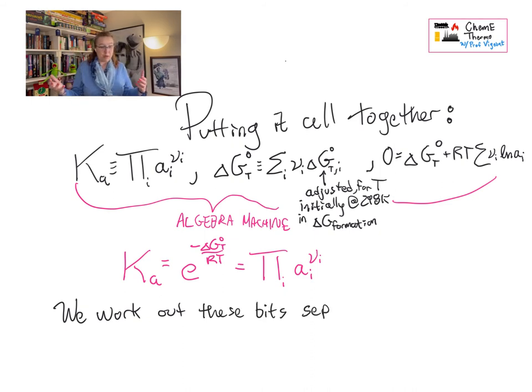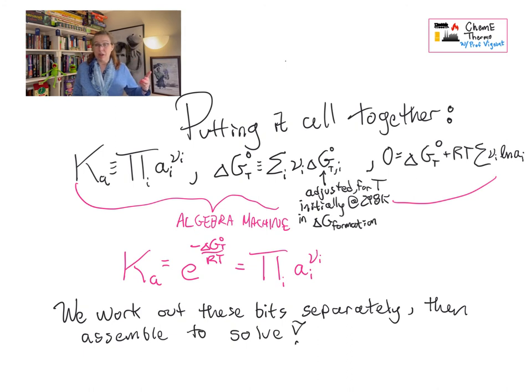Reaction equilibrium, we work out, as I say in the notes, each of these pieces separately. And what this allows us to do is at a given temperature and pressure and a given initial composition, we can figure out what the final composition at reaction equilibrium will be. And so that's a good thing for us to be able to answer as chemical engineers. When a reaction happens, we want to know what we've got when it's done. So that helps us answer this question.